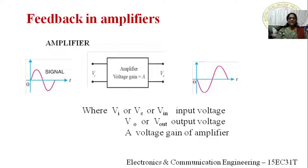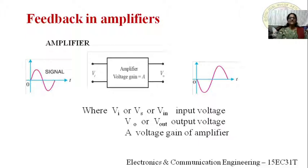The output of any amplifier should be an exact replica of the input signal. Depending upon frequency, we classify amplifiers as audio, radio, and video amplifiers. Based on signals, we have small signal amplifiers — that is voltage and current amplifiers — and large signal amplifiers, which are power amplifiers. Depending upon coupling, we classify RC coupling, transformer coupling, and direct coupling amplifiers.